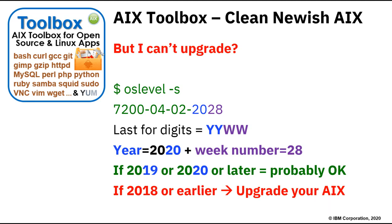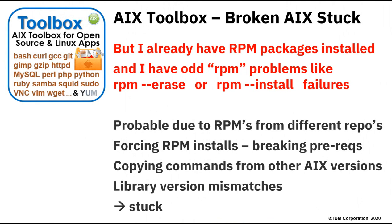You may have a copy of AIX that's old and also broken in terms of RPM packages. I have one that I've had for a decade and I've got into problems where the rpm erase command won't delete some packages, and rpm install fails because of library mismatches — stuck in a bad state. This can happen for a bunch of reasons: you've been taking RPMs from different repositories, or force-installing them, which gets you past the initial problem but creates problems in the future, or like me copying commands from other copies of AIX just to get things done. So what do you do to get out of this problem?